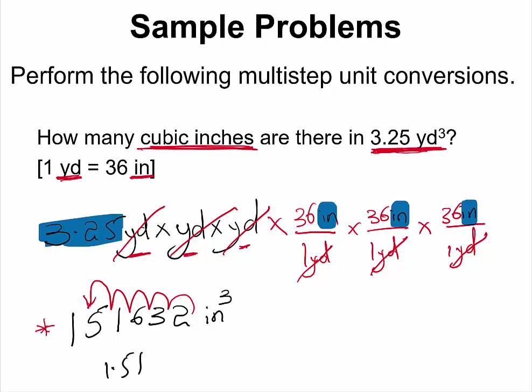times 10 to the power 5 cubic inches, which if rounded to 3 significant figures will give us 1.52 times 10 to the power 5 cubic inches.